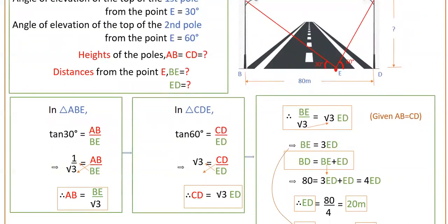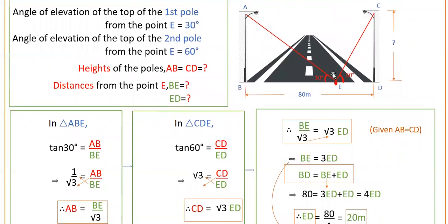In the second triangle CDE, tan 60 degrees equals CD divided by ED. Since tan 60° = √3, we get CD = √3 × ED. Since AB equals CD (the poles are of equal height as given in the problem), we can equate these two expressions.